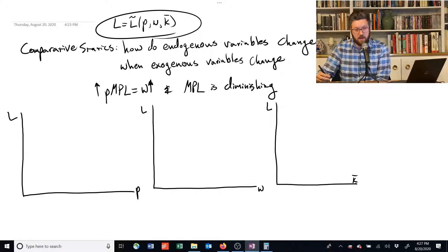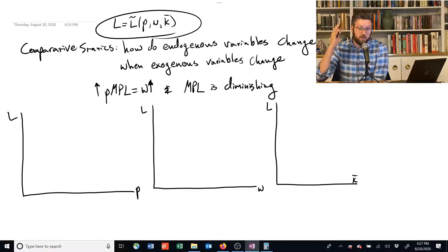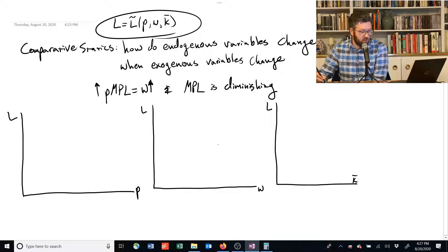So if we raise the wage rate, that means that we want to also raise the marginal product of labor. And the only way to do that is to drop labor. So if the wage rate goes up, the amount of labor has to go down.